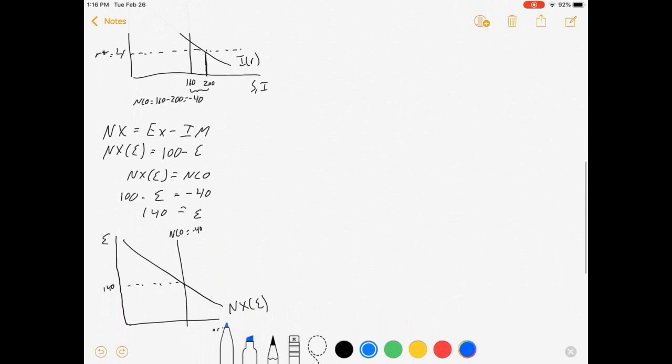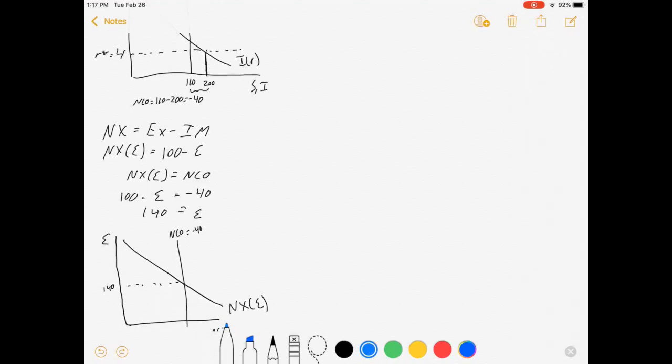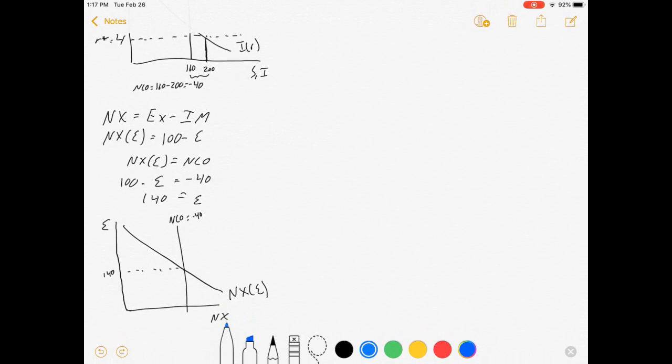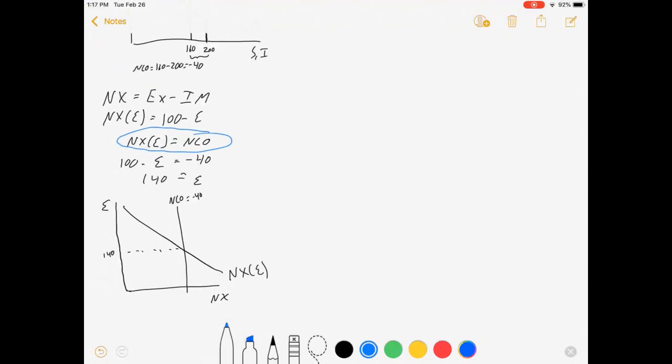Next, net exports. Exports minus imports. Our net exports is a function of our exchange rate. I made it 100 minus the exchange rate itself. I set the two equal to each other to get the equilibrium exchange rate. In this case, 100 minus E equals minus 40. That means E is 140.